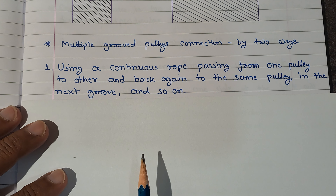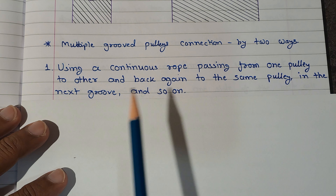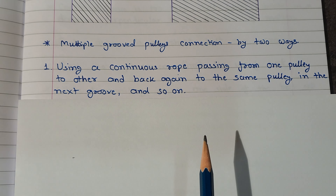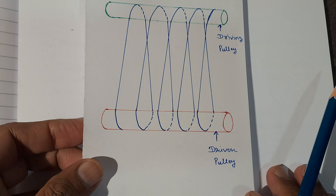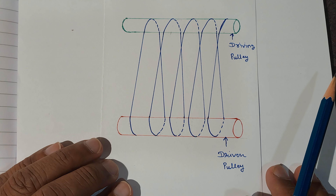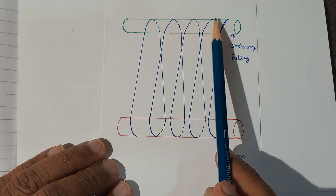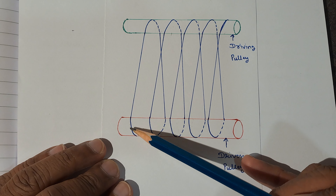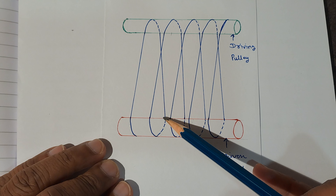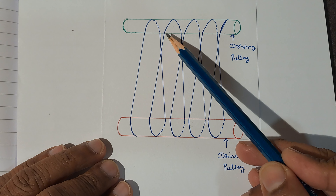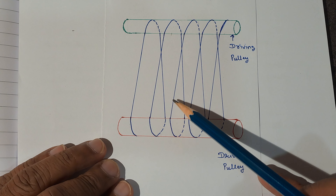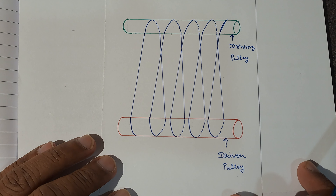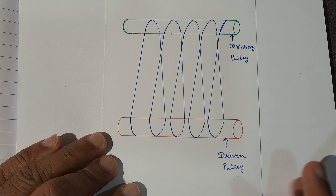The first way is using a continuous rope passing from one pulley to another and back again to the same pulley in the next groove, and so on. As seen in this diagram, this is a driving pulley having multiple grooves, and this is a driven pulley having multiple grooves. A single rope passes from one groove and comes back on the next groove continuously through the subsequent grooves.